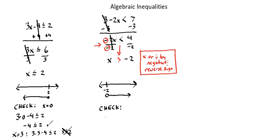So as a check, let's try x equals 0. When we put x equals 0 into the original equation: 3 minus 2 times 0 is less than 7. 3 minus 2 times 0 is 0, so 3 is less than 7 — and yes, that is a true statement. You can put in a value, say, of negative 3, which is excluded from the inequality, and you will find that the statement will be false, as it should be, because negative 3 is outside of the solution.